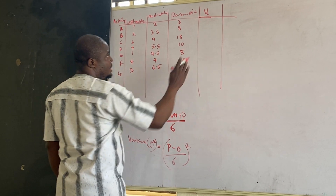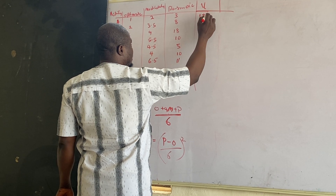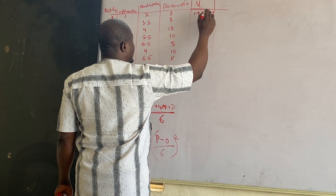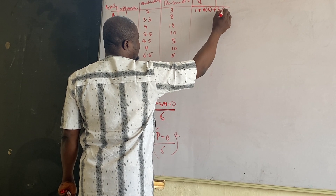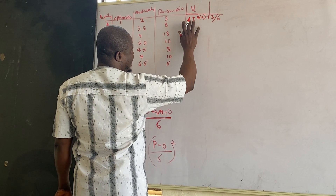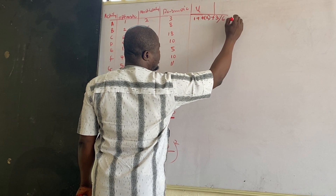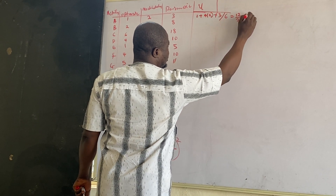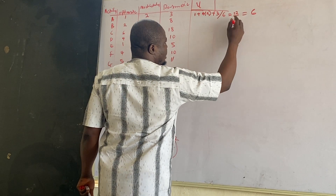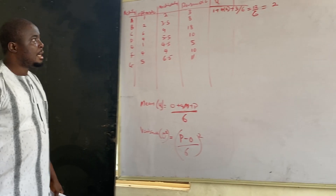For the first example, the mean is: 1 plus 4 times 2 plus 3, all divided by 6. That gives us 1 plus 8 plus 3, which is 12. So 12 divided by 6 gives us 2. That is the mean for this activity.